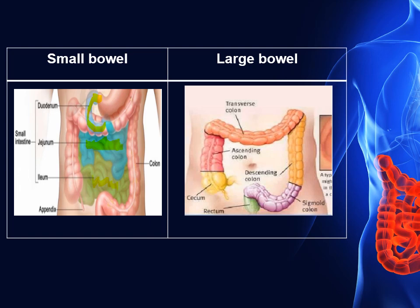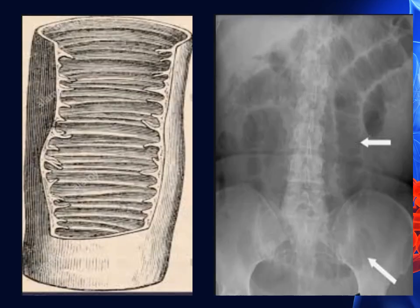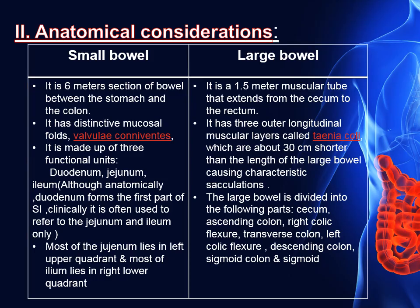As you can see here, the jejunum, marked by the blue line, occupies the upper part of the abdomen and is inclined more to the left side, while the ileum, highlighted by the green line, is located in the lower part of the abdomen and inclined more to the right side. The small bowel has a characteristic appearance secondary to the mucosal folds called valvulae conniventes.